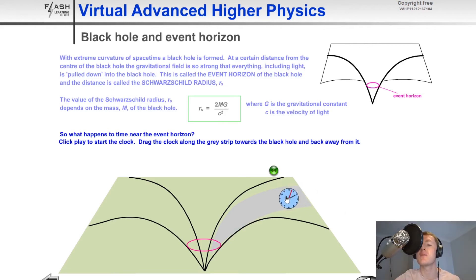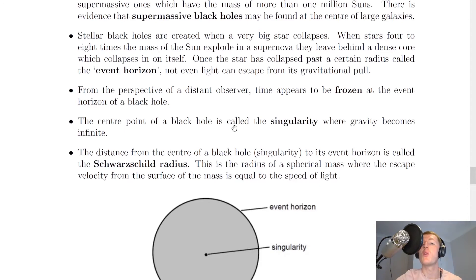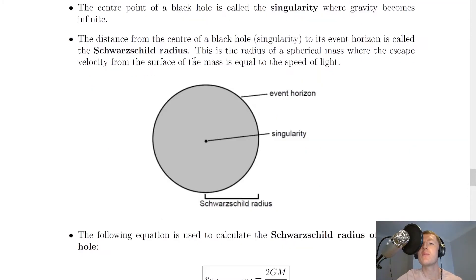So we can conclude that time slows down near the event horizon of a black hole, but it then becomes frozen at the event horizon. We also say that the centre point of a black hole is called the singularity, where gravity becomes infinite. The distance from the centre of a black hole, the singularity, to its event horizon is called the Schwarzschild radius. This is the radius of a spherical mass where the escape velocity from the surface of the mass is equal to the speed of light.